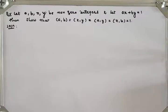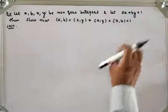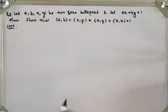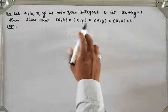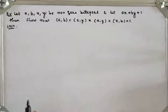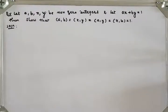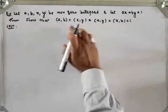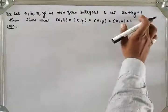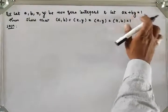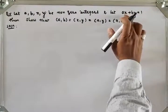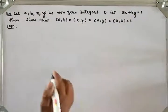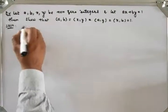We have the integers A, B, X, Y and we have the equation AX plus BY equal to 1. We have to show GCD of AB, GCD of XY, GCD of AY, and GCD of XB which is equal to 1. To show these numbers have GCD of 1, if we assume AX plus BY has GCD of D, then what will happen?